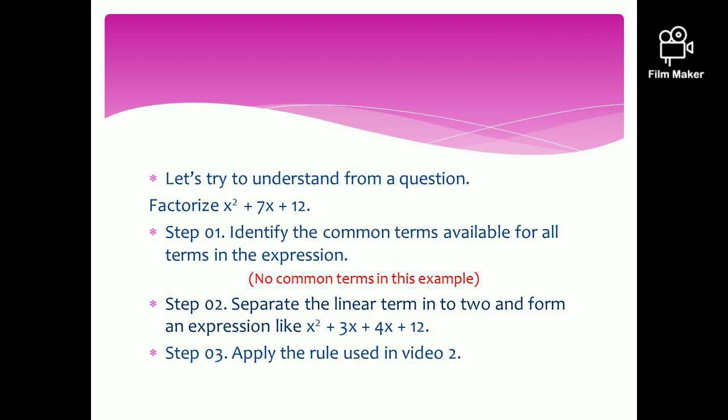Let's try to understand the theory from a question. The question is to factorize x squared plus 7x plus 12. We have to follow these steps. Step 1: identify any common terms available for all the terms in this expression. The first term is x squared, the second term is 7x, and the third term is 12. There are no common terms, so we can omit step 1.